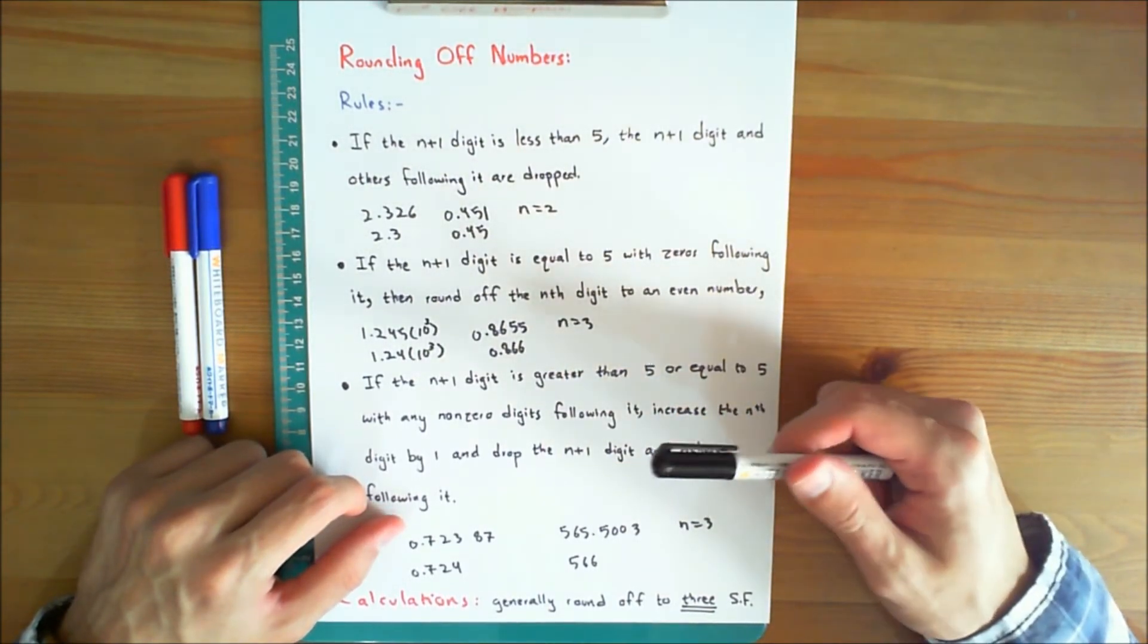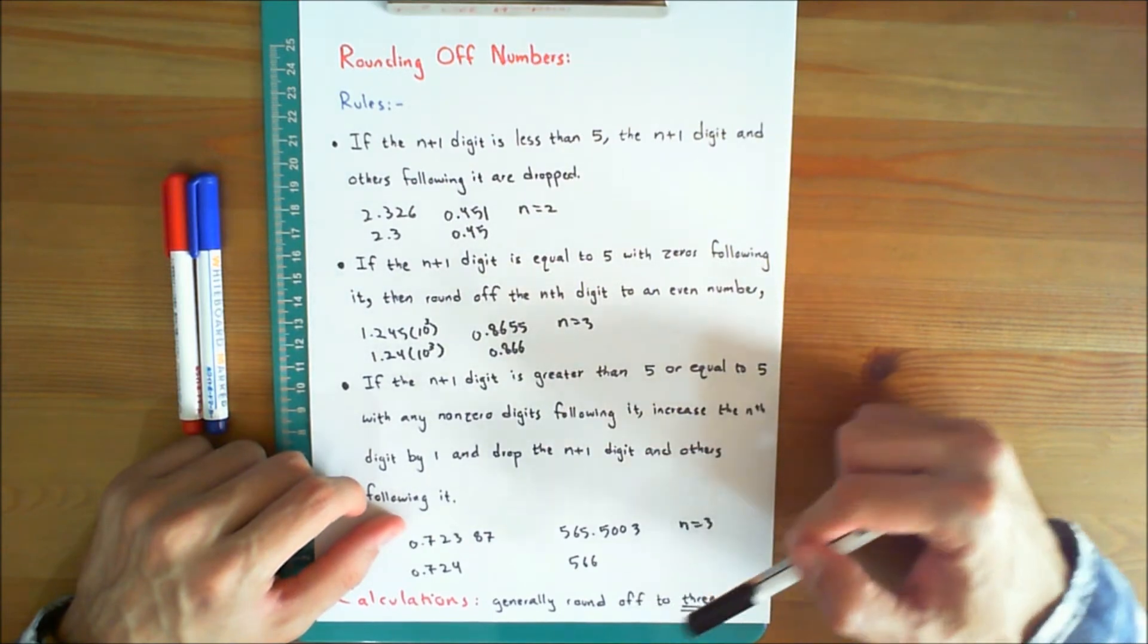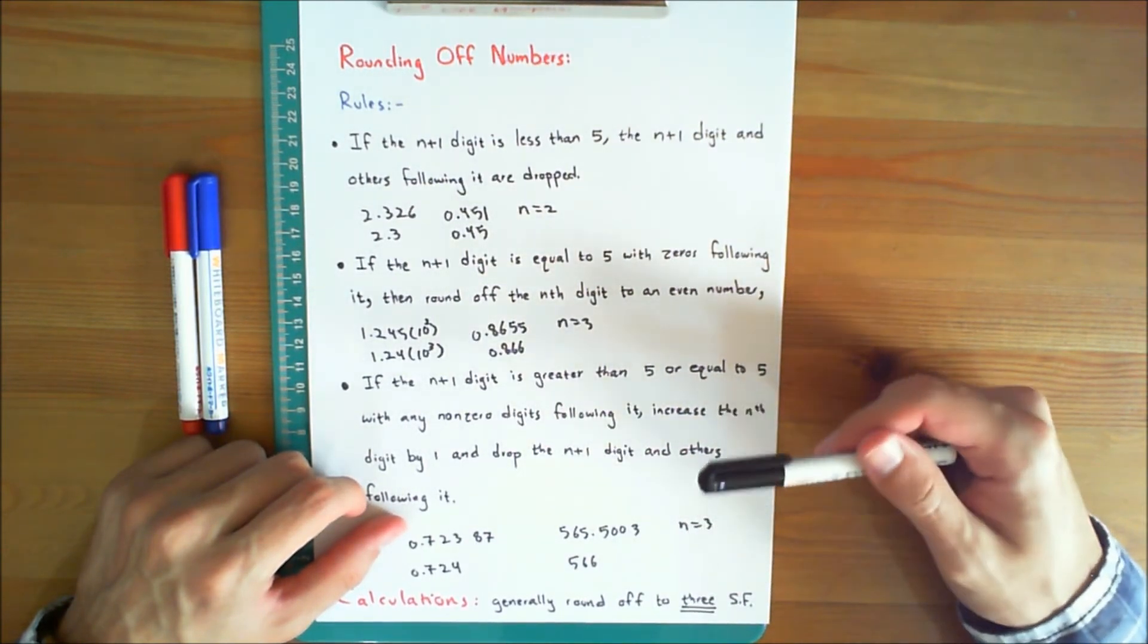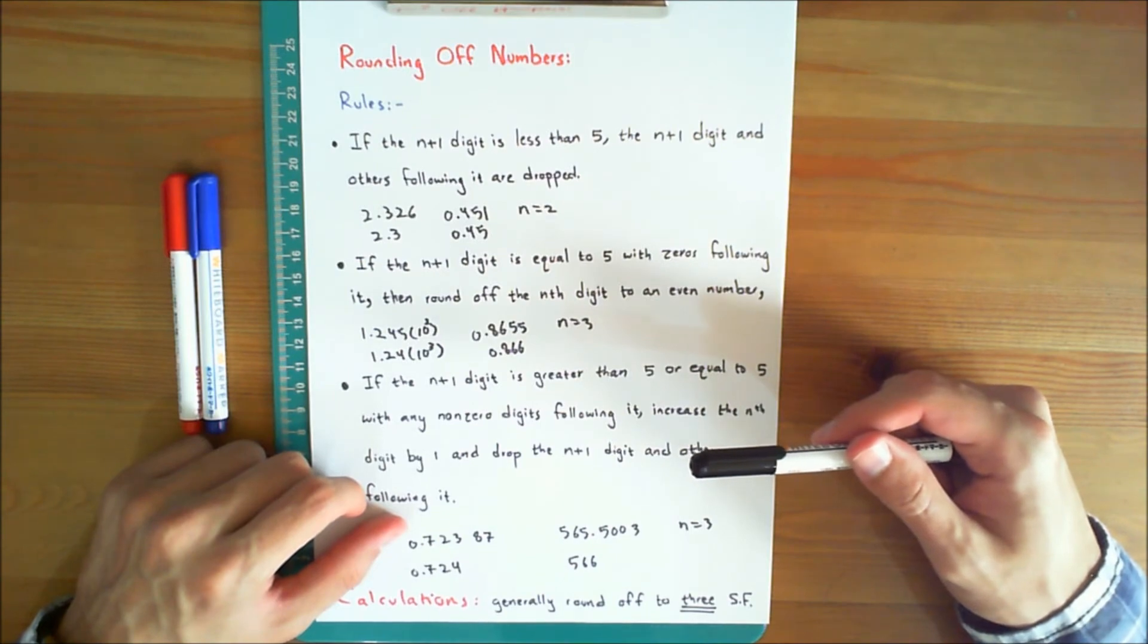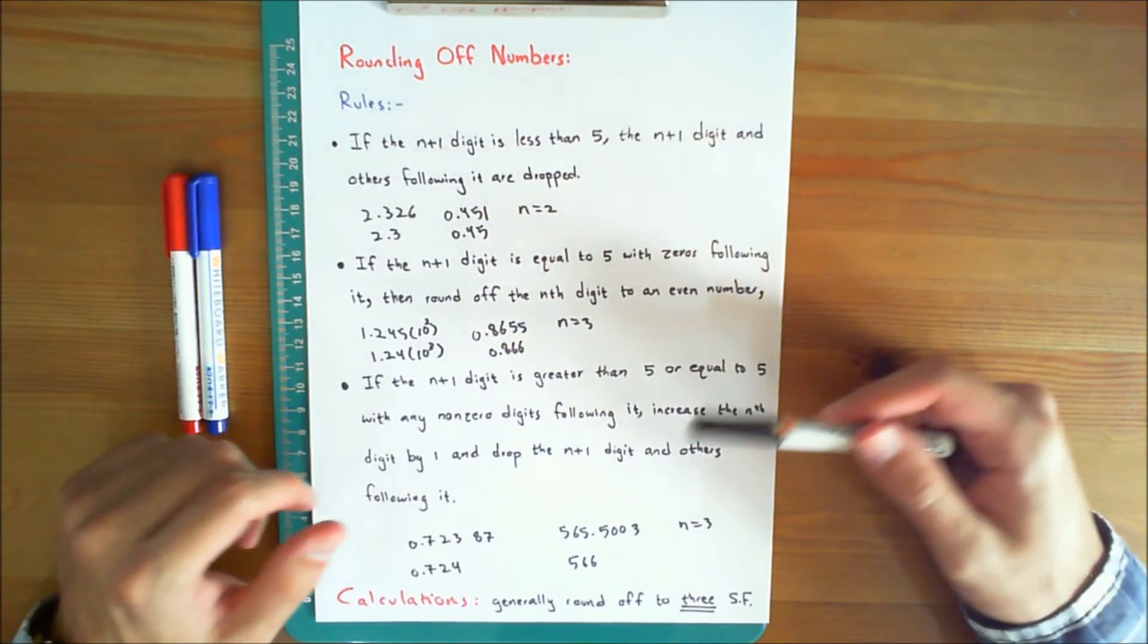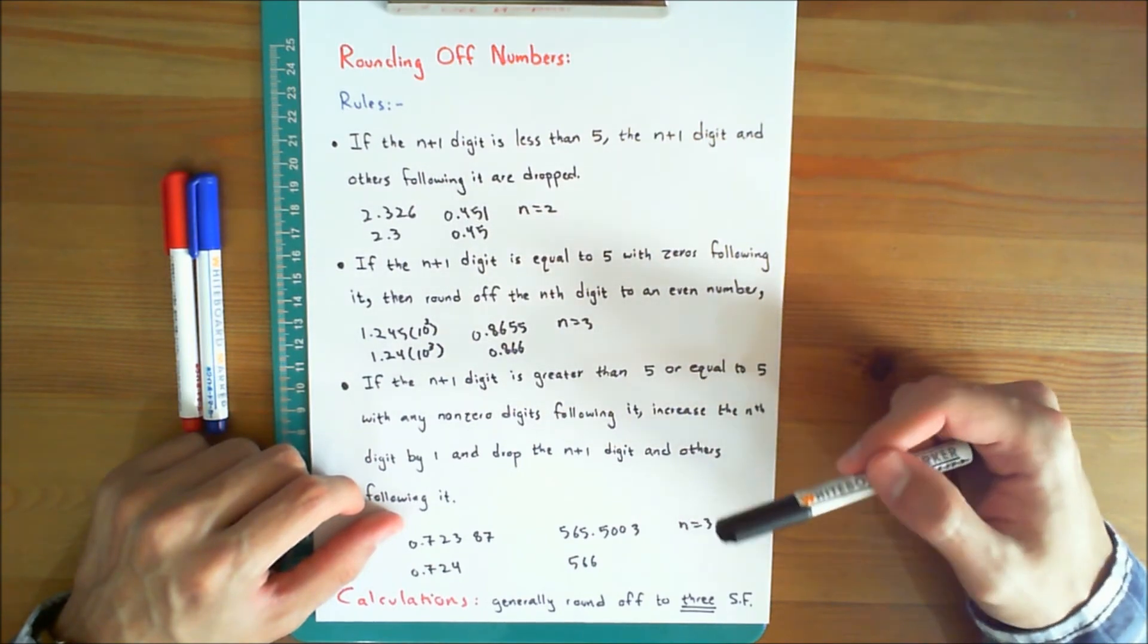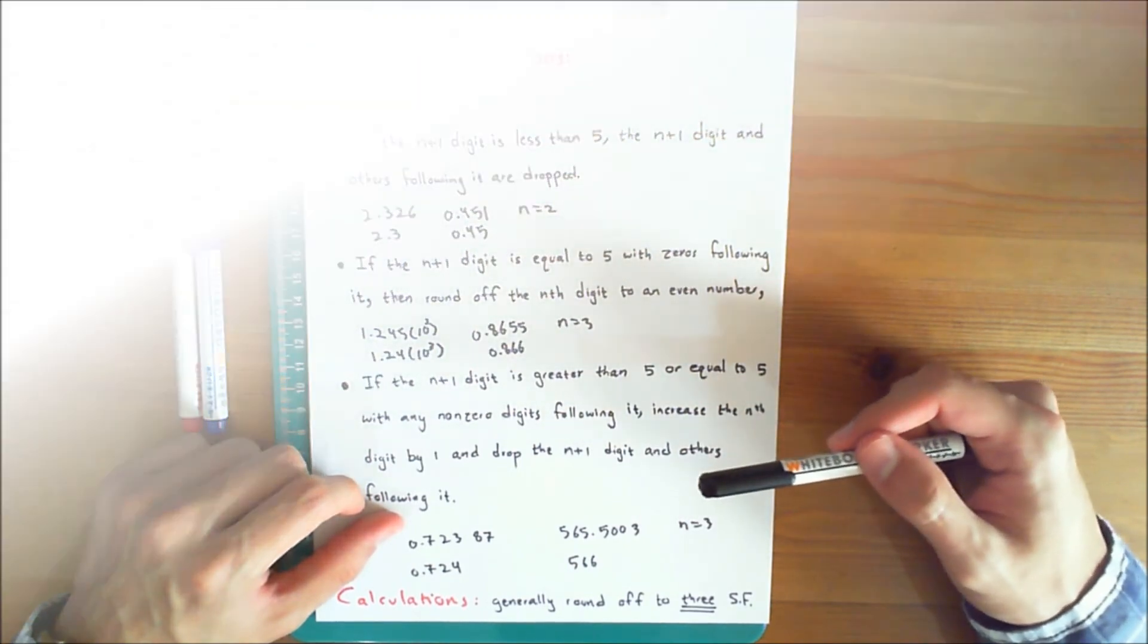In engineering, we generally round off final answers to 3 significant figures, since the data for geometry, loads, and other measurements are often reported with this accuracy. Of course, some numbers such as pi, e, or numbers used to derive formulas are exact and are therefore accurate to an infinite number of significant figures.